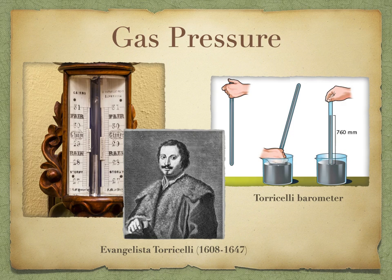The instrument used to measure pressure is called a barometer. The original design comes from Evangelista Torricelli. He took a tube with markings, filled it completely with mercury, covered it, and then inverted it in a bowl of mercury — and back then they didn't know that mercury absorbed through the skin creates serious problems.